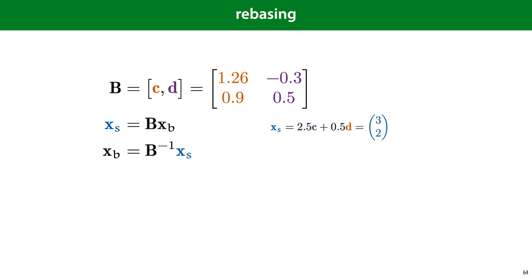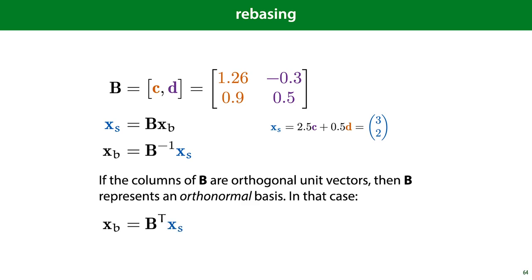Since inverting a matrix is an expensive and numerically unstable operation, it's good to focus, if possible, on orthonormal bases — bases for which the basis vectors are orthogonal (the angle between any two is 90 degrees) and normal (all vectors have length 1). If that's the case, then the matrix transpose of B, which is simple to compute without loss of precision, is equal to the matrix inverse. So we can switch back and forth between bases quickly without losing information.